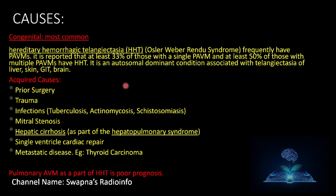Etiology: congenital is the most common cause. Hereditary hemorrhagic telangiectasia, also known as Osler-Weber-Rendu syndrome, frequently has pulmonary AVMs — at least 33% of those with a single pulmonary AVM and at least 50% of those with multiple pulmonary AVMs have HHT. It is an autosomal dominant condition associated with telangiectasia of the liver, GI tract, and brain. Acquired causes include prior surgery, trauma, infections such as tuberculosis, actinomycosis, schistosomiasis, mitral stenosis, hepatic cirrhosis as part of hepatopulmonary syndrome, single ventricle cardiac repair, and metastatic diseases such as thyroid carcinoma. Pulmonary AVM as part of HHT carries a poor prognosis.